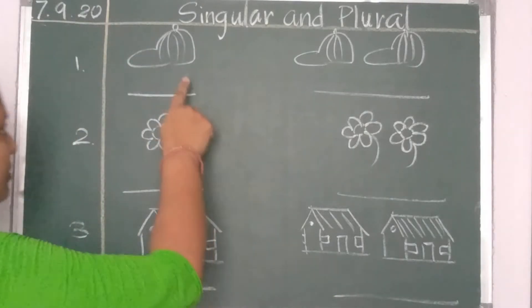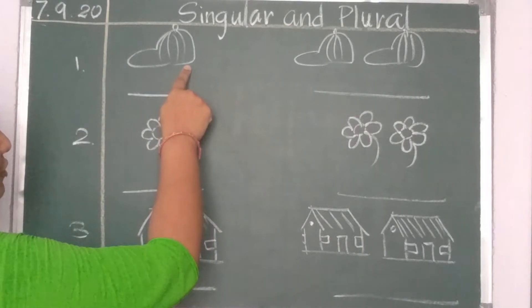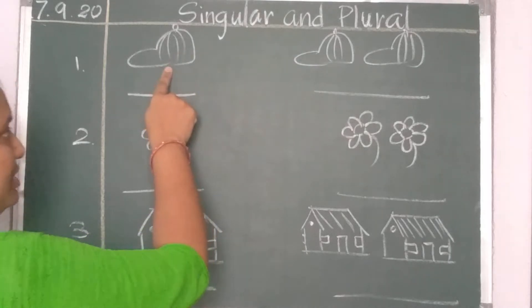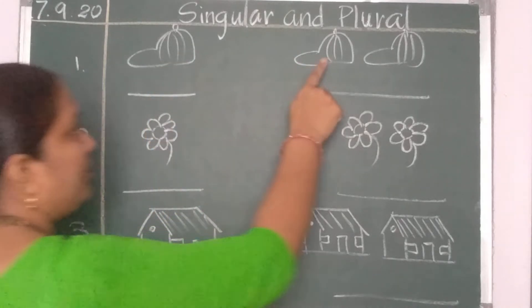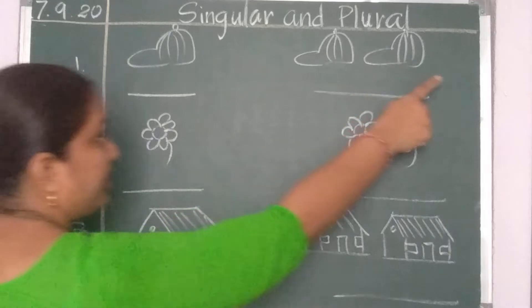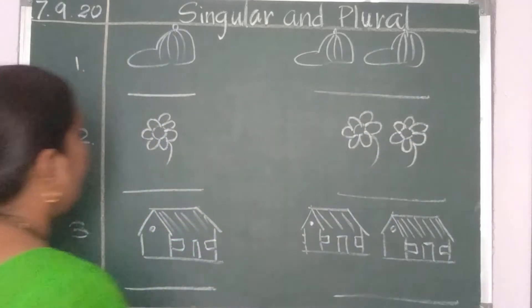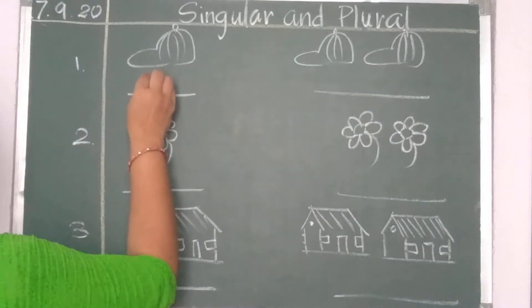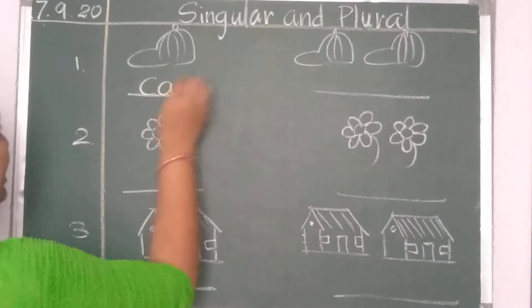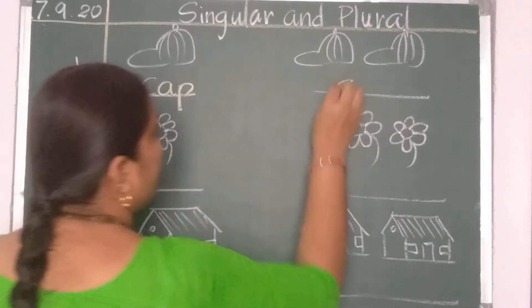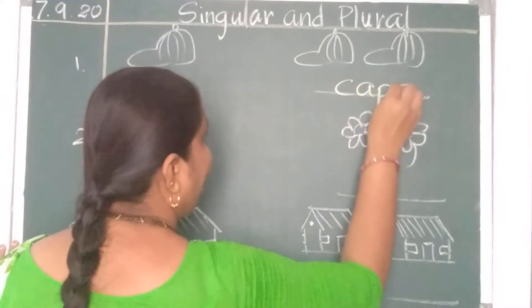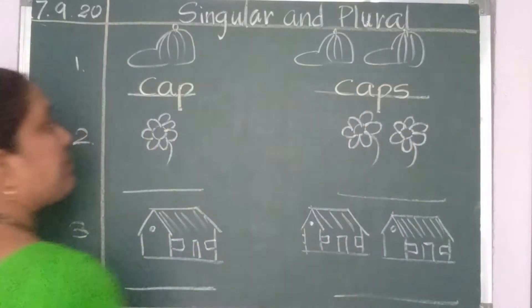See children, this is a picture of a cap. Here only one cap is there and here two. So cap and caps. C-A-P, cap. C-A-P-S, caps.